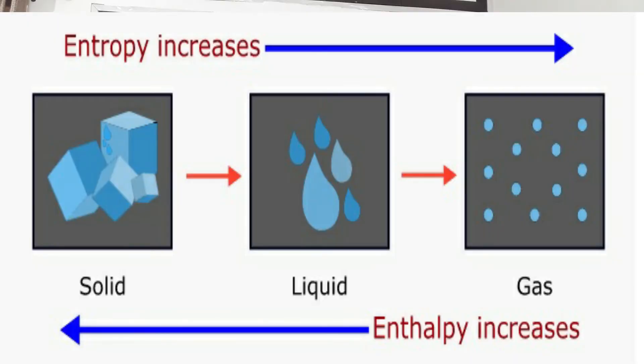When we are converting from solid to liquid, the randomness of the molecules increases — the freedom of the molecules increases. When we are converting from liquid to gas, the randomness of the molecules still increases more. So the more the entropy, the more the freedom of molecules. From solid state to liquid state, from liquid state to gaseous state, the freedom of molecules becomes higher, and then we say the entropy is higher.